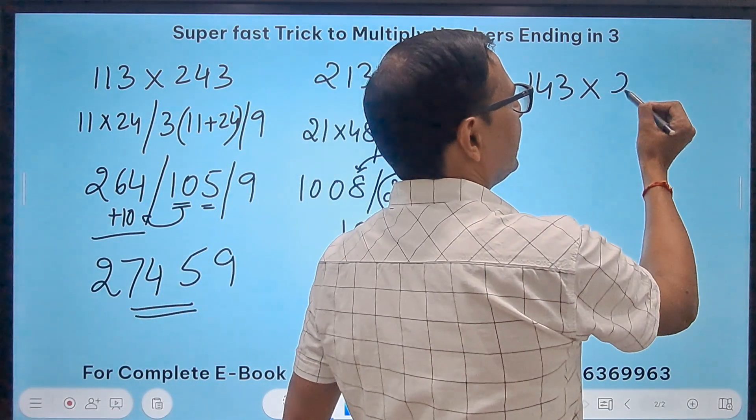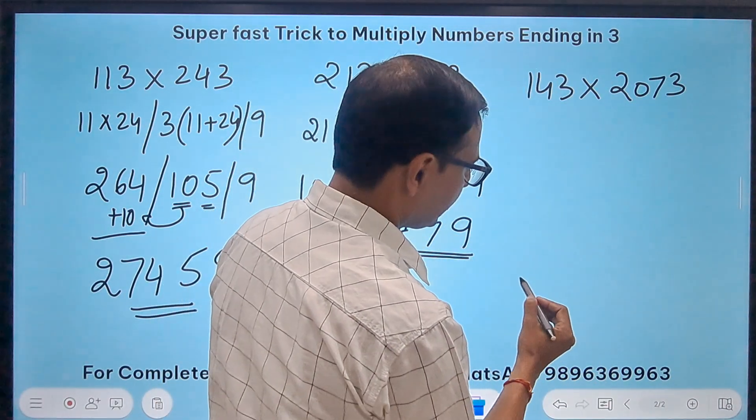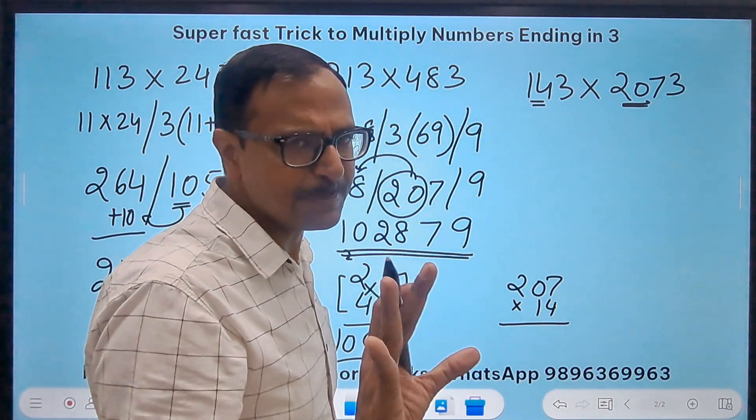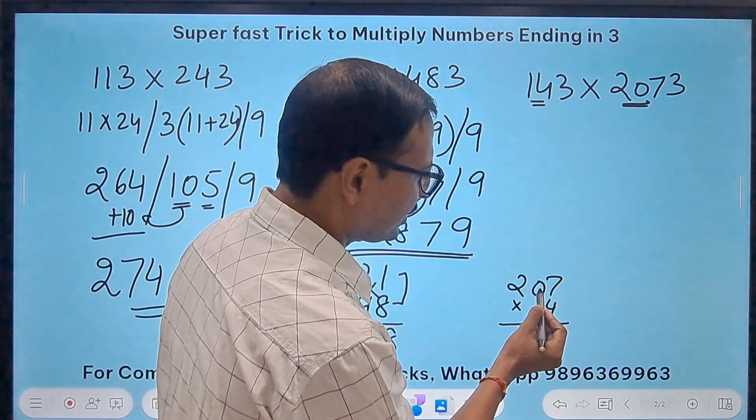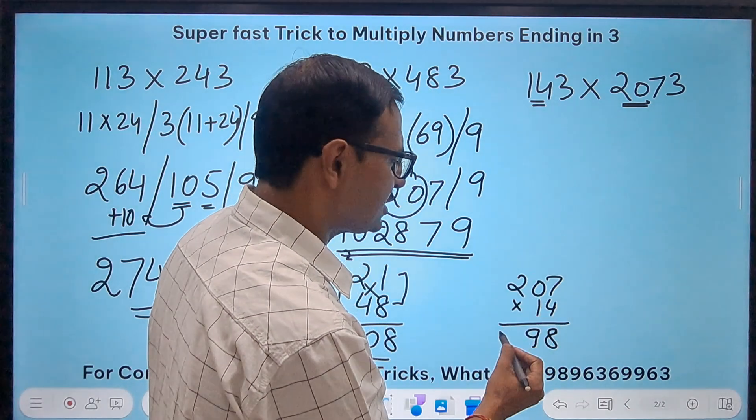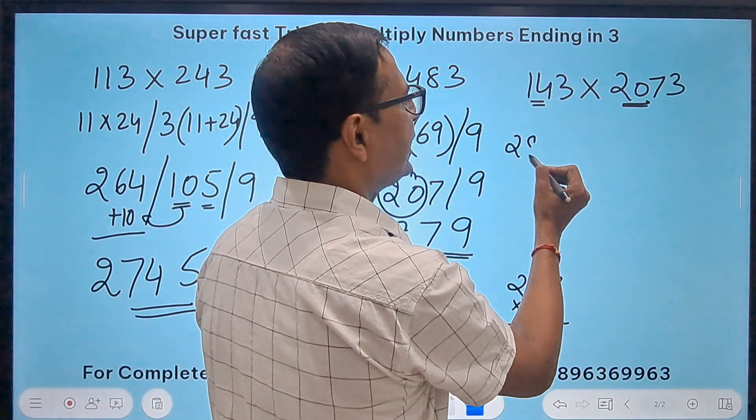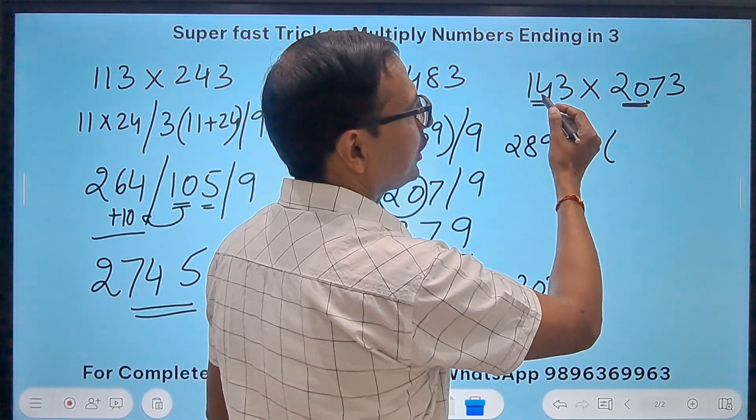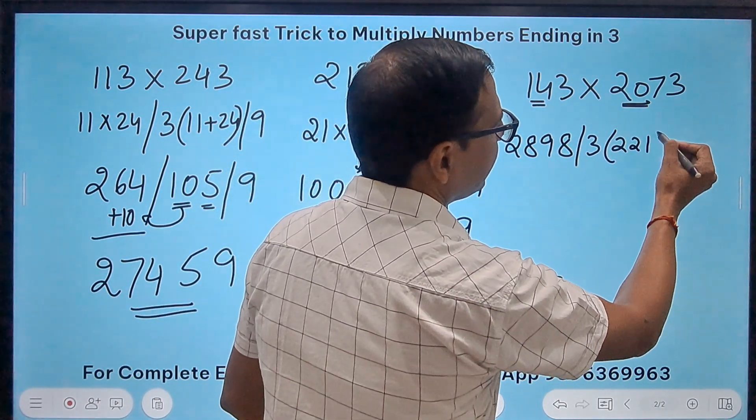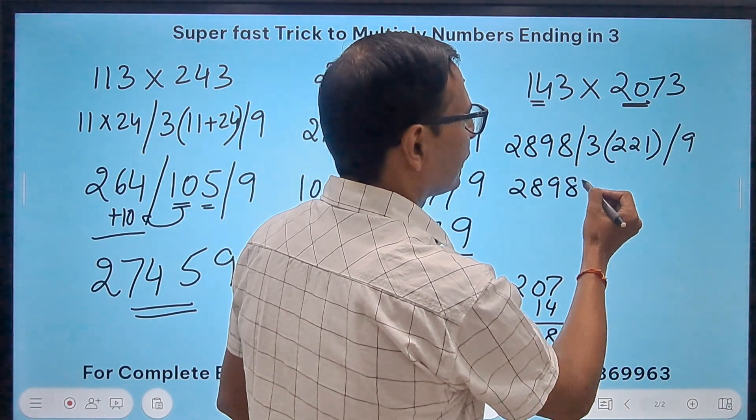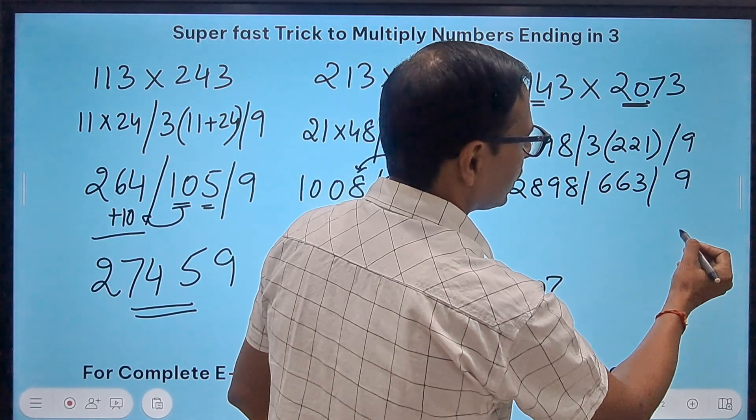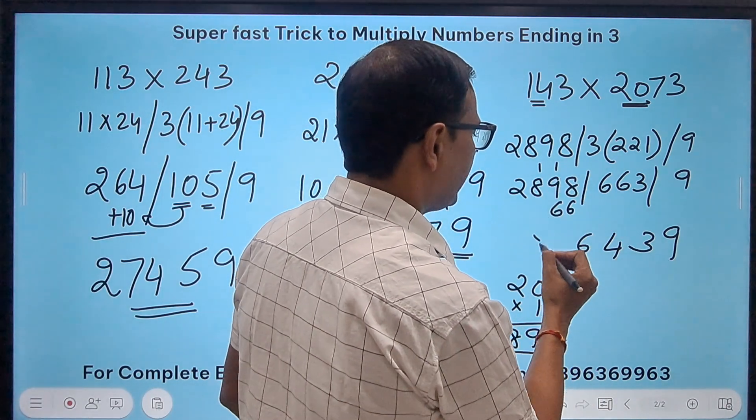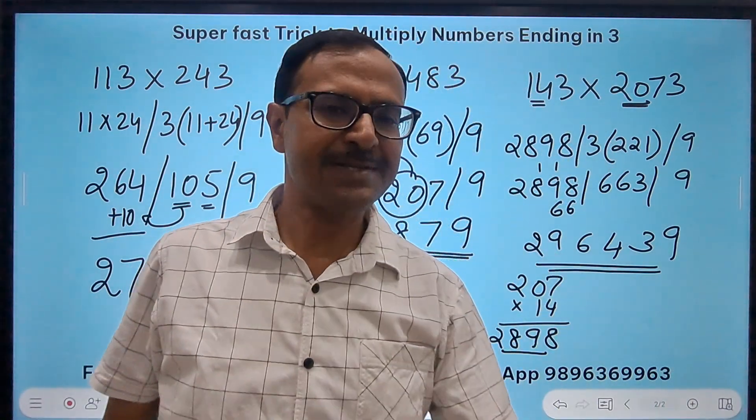Say I'll take a four digit number, 143 and 2073. How about this? So the first thing is the 207 here and the 14 here, I need to multiply that. I know my 14 times table, so that's pretty easy for me. 14 times 7 is 98, so here we have a 0, so 98 will come as it is, and 14 times 2 is 28. So 2898, and then 3 times what? The sum. Now what is the sum of 207 and 14? It is 221, and then the 9. So this is 2898 and then 663 and then 9. So 9, 3, 66 added here, 8 plus 6 is 14, 4, 1 carry, 16, 6, 1 carry, 29. So 296439 is the product of these two required numbers.